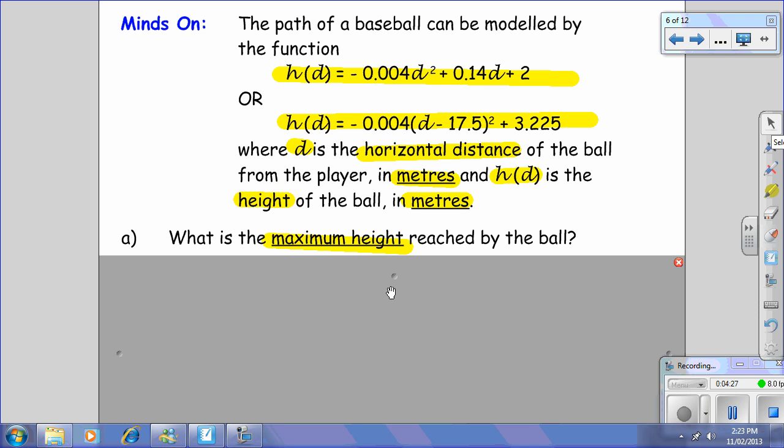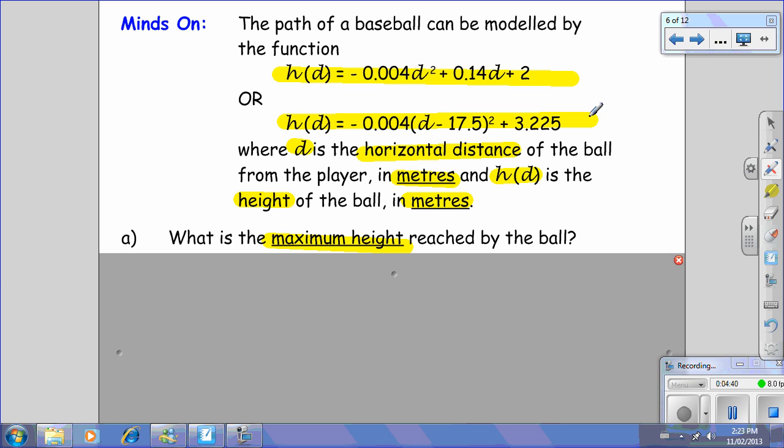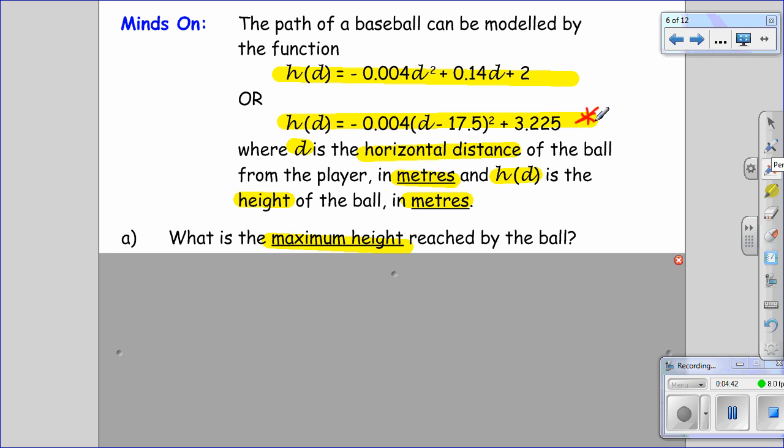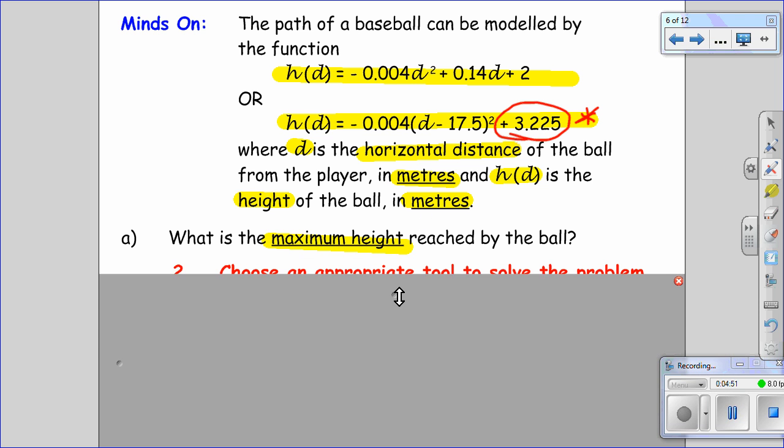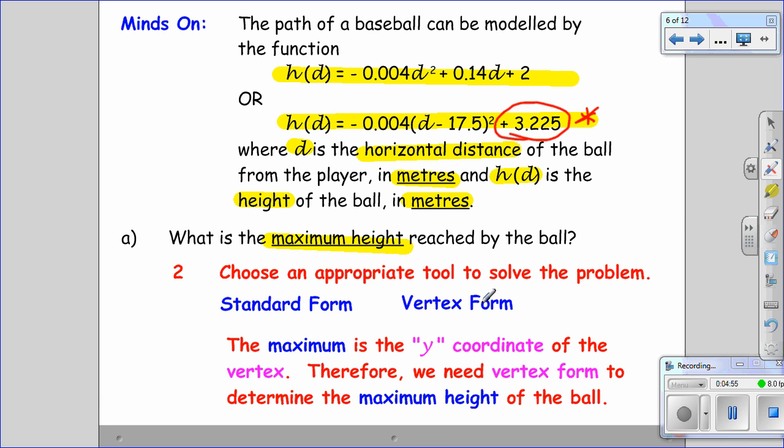So in Part A, the maximum height reached by the ball. We've highlighted, we've underlined. Next step is to think about the tool we're going to use. If I want a maximum and I see a quadratic, a maximum occurs at the vertex. So of course I want to use this vertex equation. Now where does the maximum height happen? It happens at the K value of the vertex, which in this case is 3.225.